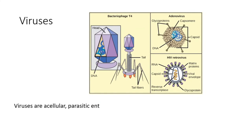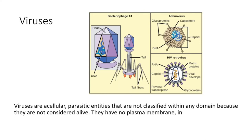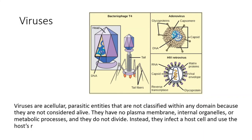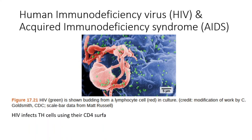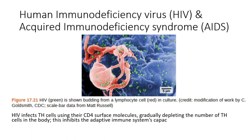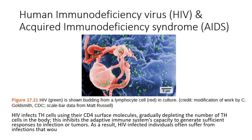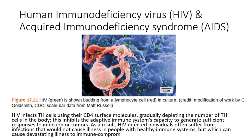Viruses are acellular parasitic entities that are not classified within any domain, because they are not considered alive. They have no plasma membrane, internal organelles, or metabolic processes, and they do not divide. Instead, they infect a host cell and use the host's replication processes to produce progeny virus particles. HIV infects T-helper cells using their CD4 surface molecules, gradually depleting the number of T-helper cells in the body. This inhibits the adaptive immune system's capacity to generate sufficient responses to infection or tumors. As a result, HIV-infected individuals often suffer from infections that would not cause illness in people with healthy immune systems, but which can cause devastating illness to immune-compromised individuals.